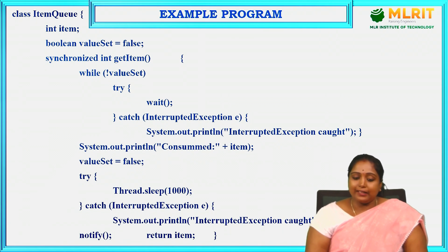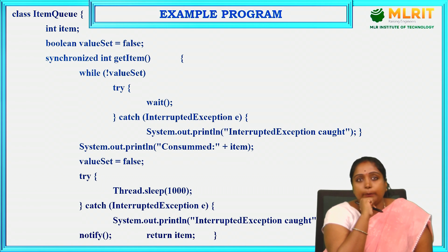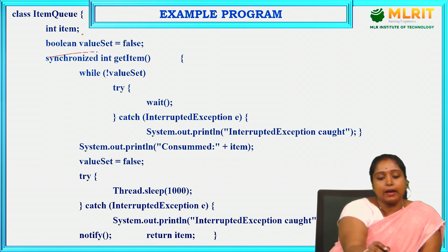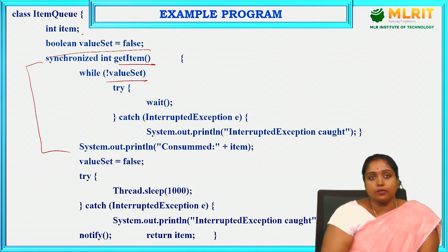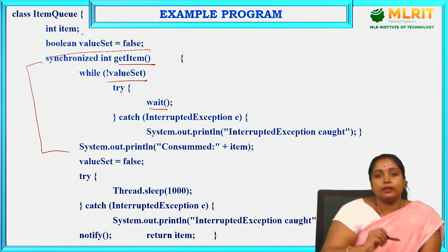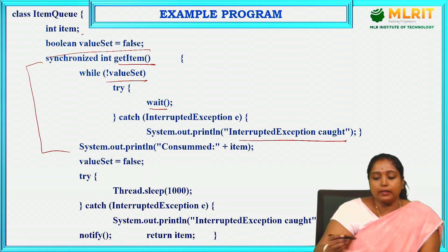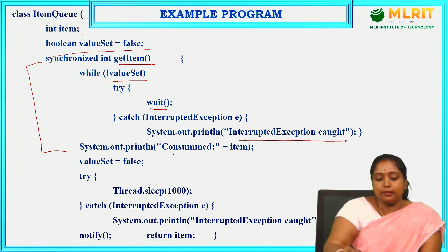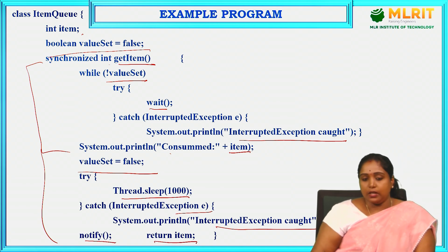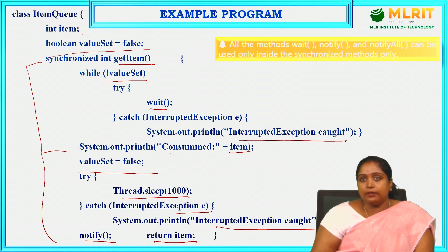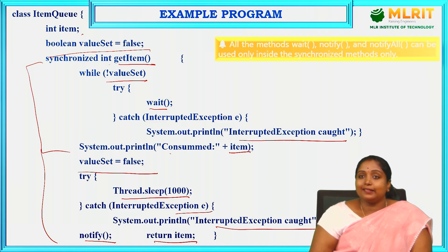We are going to write a program for this using an ItemQueue. I have an item and a buffer. The item's valueSet is defaulted to false. The getItem method is synchronized. If valueSet is false (i.e., not valueSet is true), the thread has to wait first and will print an interrupted exception if any exception occurs. Then the consumer consumes the item, valueSet becomes false, the thread sleeps for 1000 milliseconds, and if any interruption happens it is caught. Then you notify the other thread and return the item. The wait, notify, and notifyAll methods can only be used inside synchronized methods.